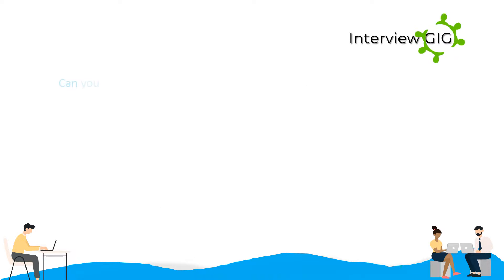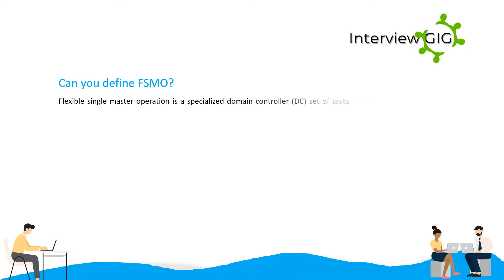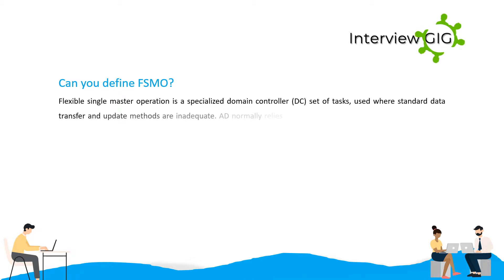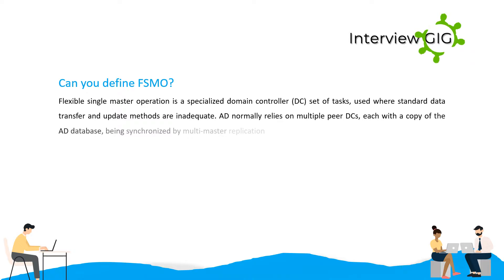Can you define FSMO? Flexible Single Master Operation is a specialized Domain Controller DC set of tasks, used where standard data transfer and update methods are inadequate. AD normally relies on multiple peer DCs, each with a copy of the AD database, being synchronized by multi-master replication.